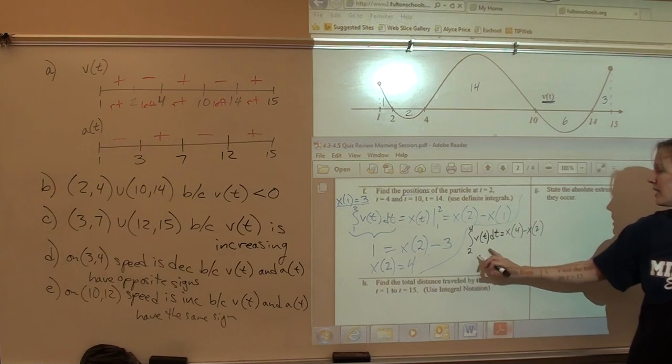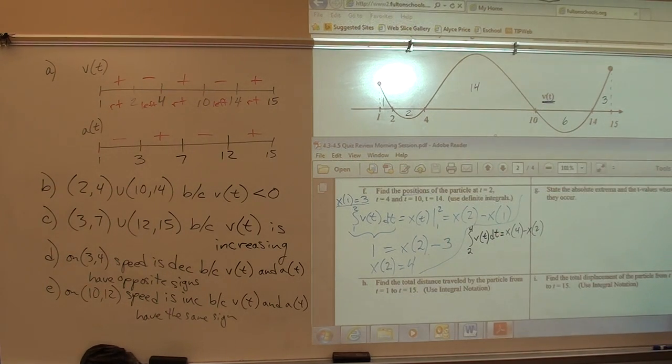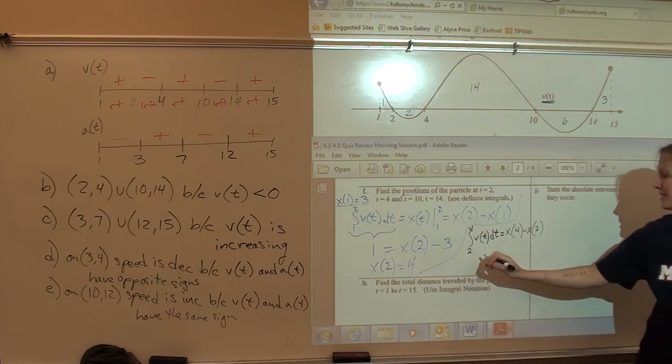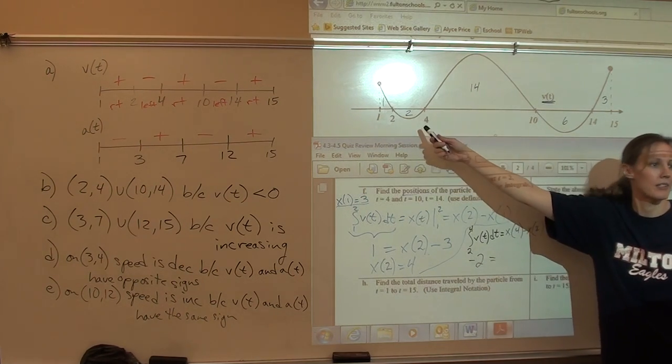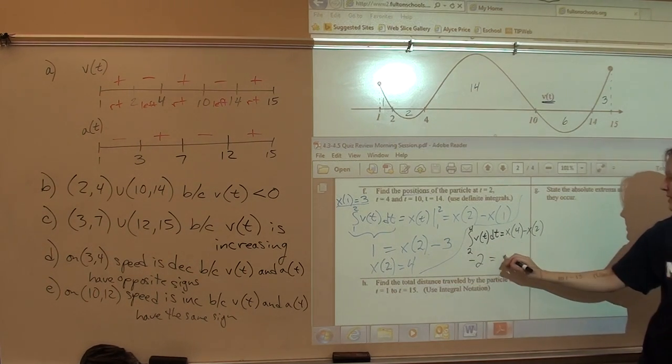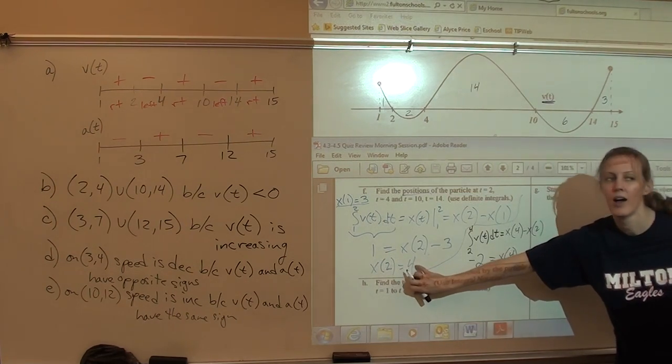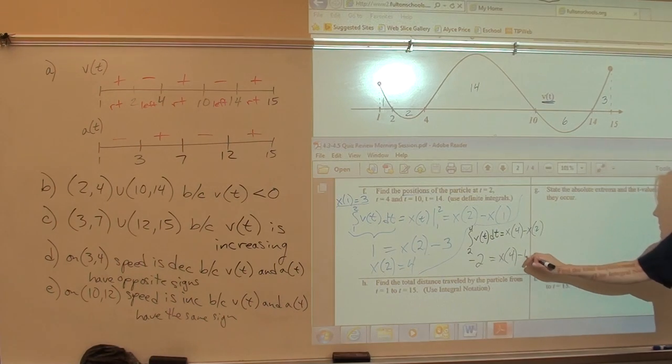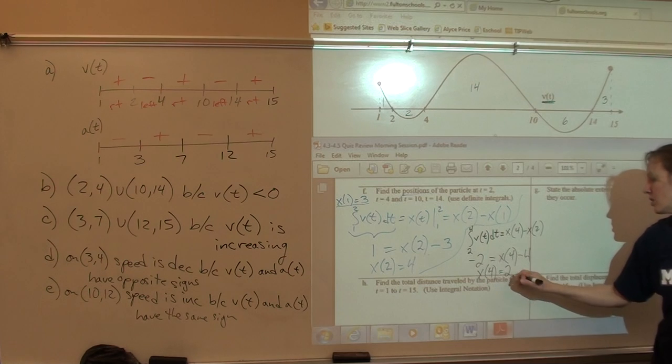What is the integral from 2 to 4 of v of t? It's close. It's negative 2. Why is it negative 2? Because it's below the x-axis. So, the area is 2, but the integral is negative 2. This equals x of 4 minus, what's x of 2? It's 4. You just found it. So, x of 4 equals 2.